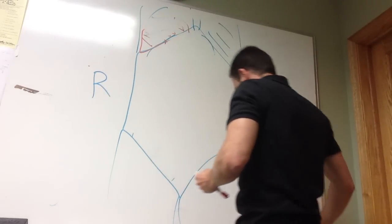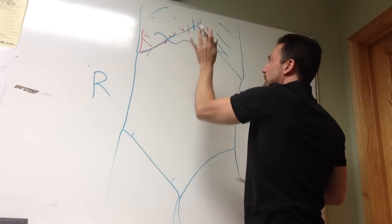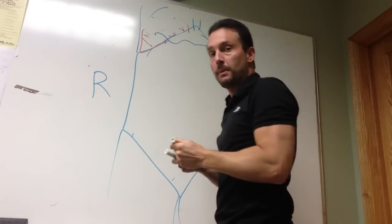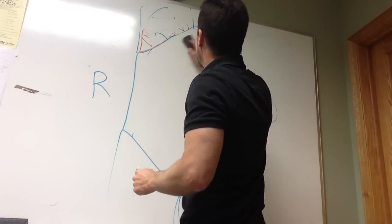Your pancreas sits across the upper abdomen and is kind of right in this region. So right upper quadrant, epigastric, or left upper quadrant can all be pancreatitis type of symptoms. So that's a little bit more varied.